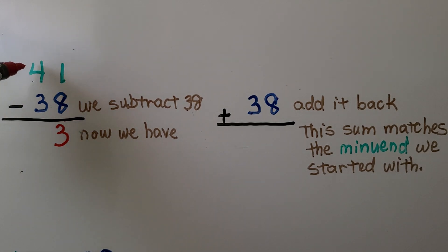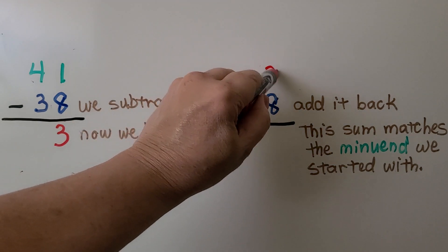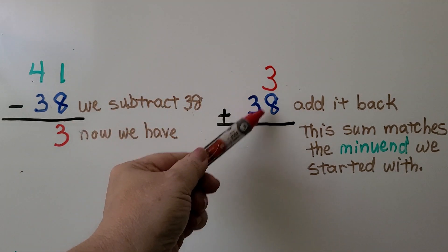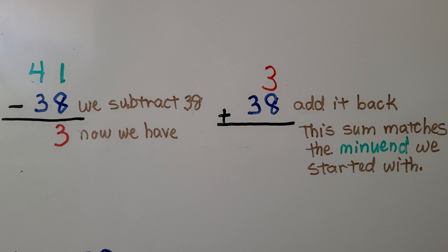We needed 2 more to get to 40, and then to get to 41 we just needed 1 more, and 2 plus 1 is 3. So now we have 3. We can add it back.